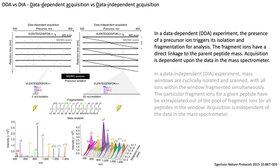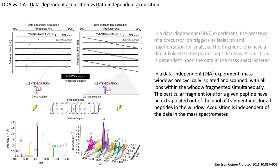In contrast, in a data-independent experiment, mass windows are cyclically isolated and scanned with all of the ions within the window fragmented simultaneously. The particular fragment ions for a given peptide have to be extrapolated out of the pool of fragment ions for all peptides in the window. Acquisition is independent of the data in the mass spectrometer, hence the name data-independent acquisition.